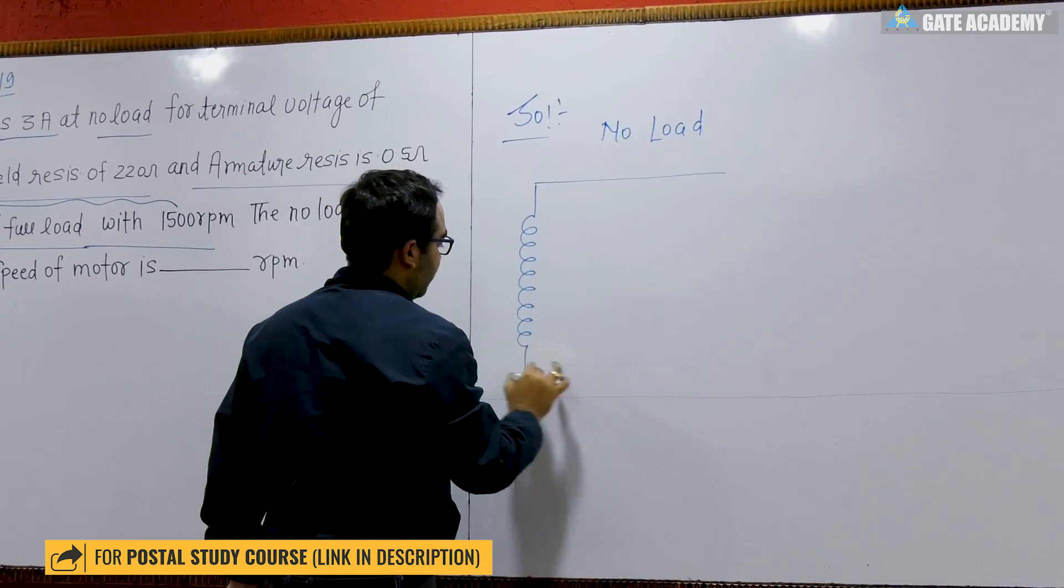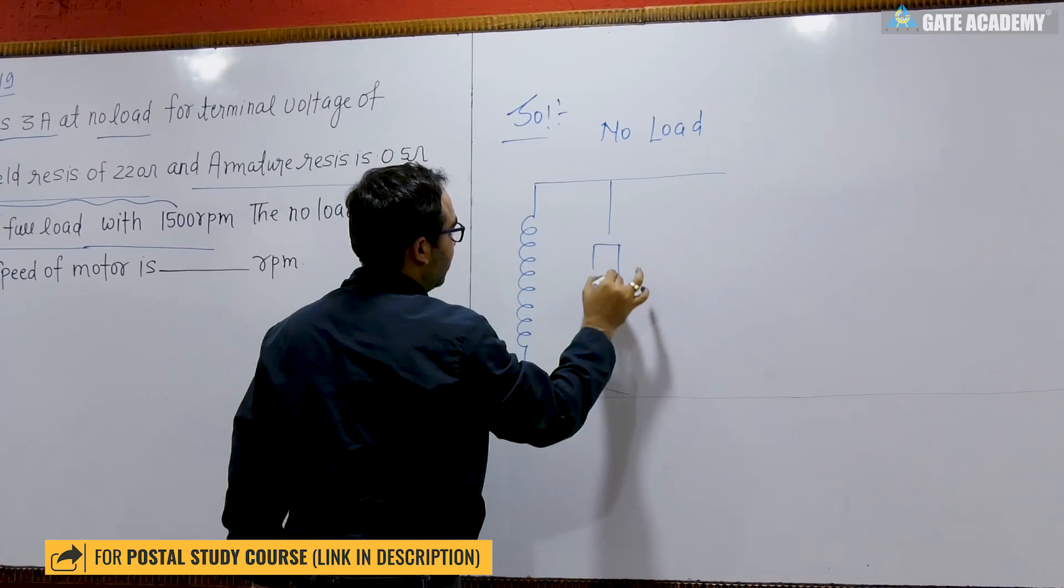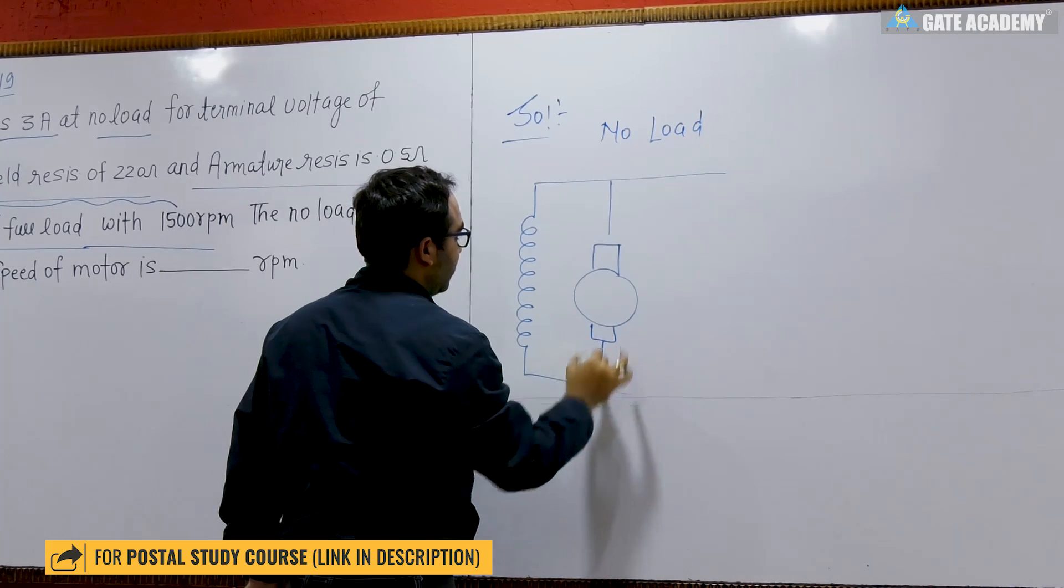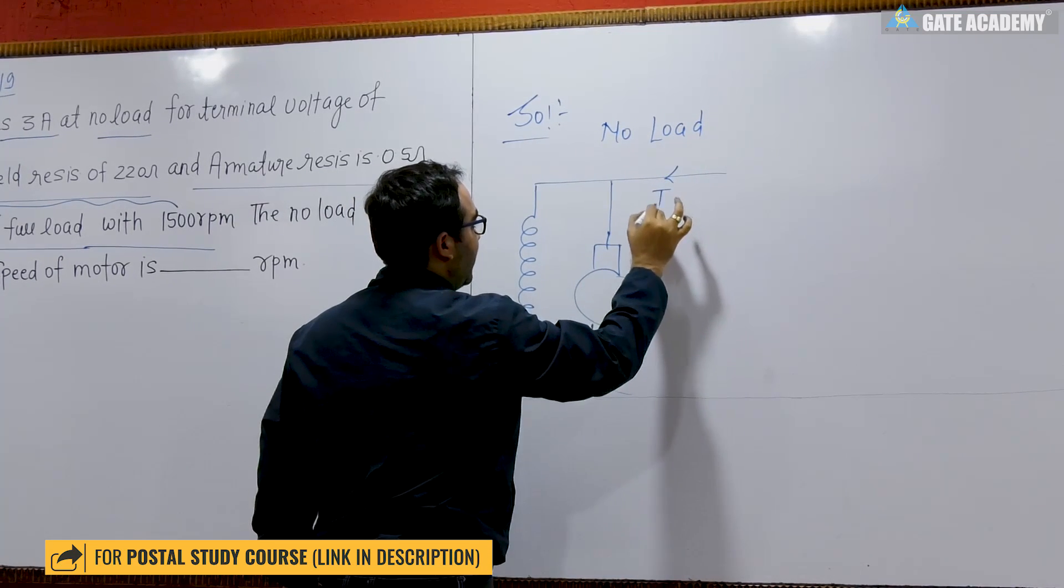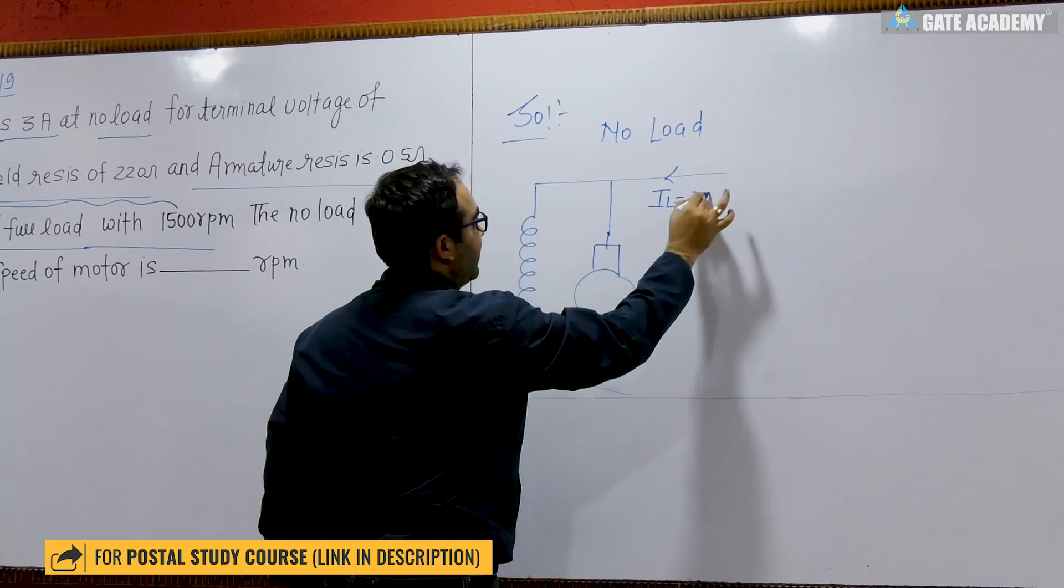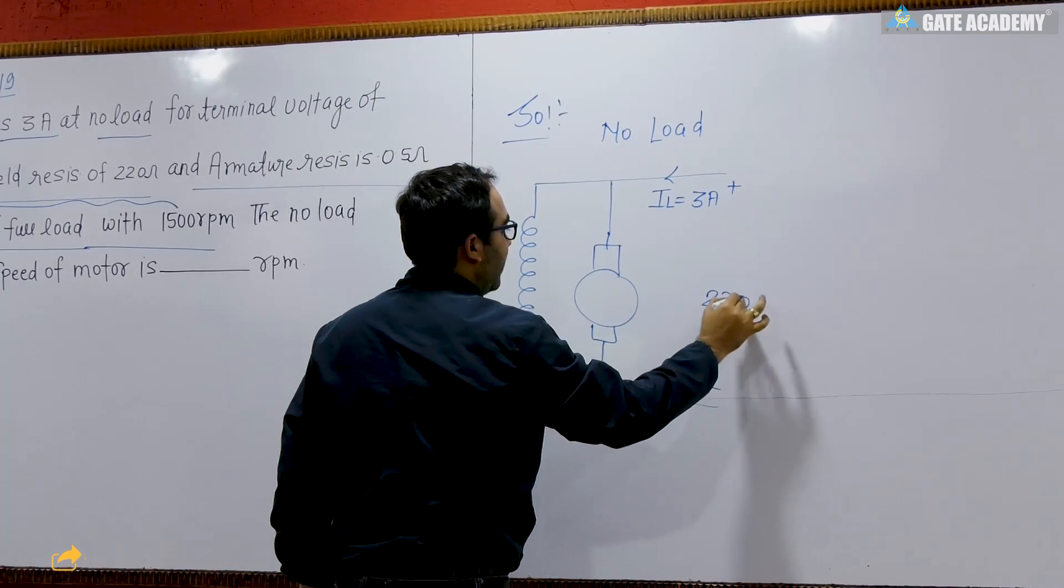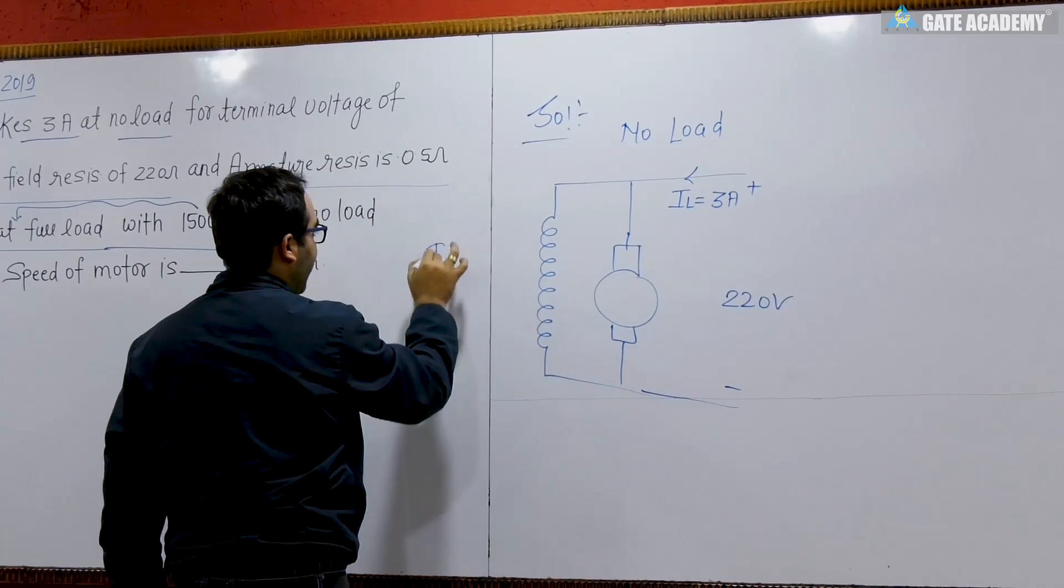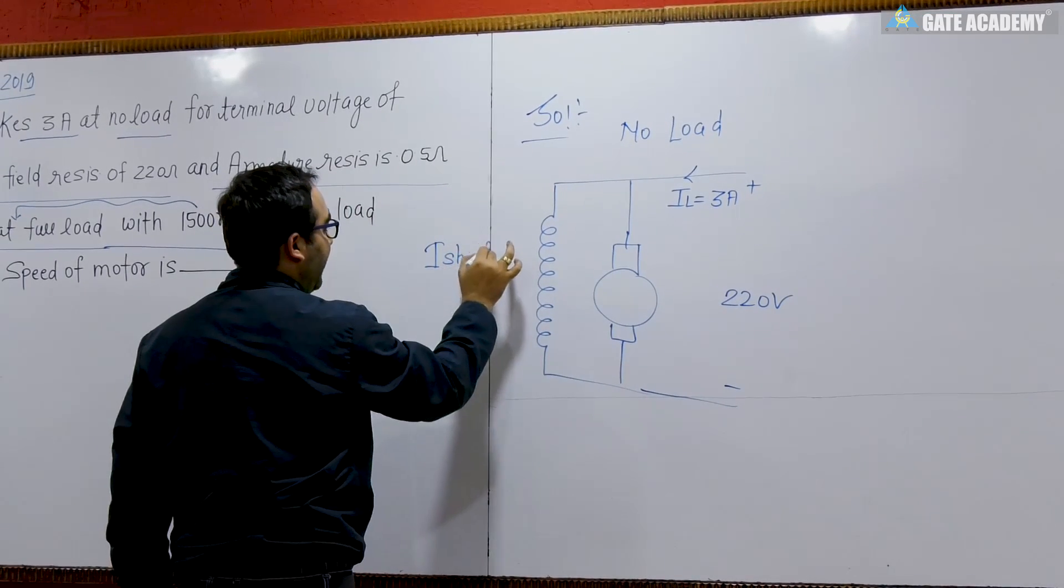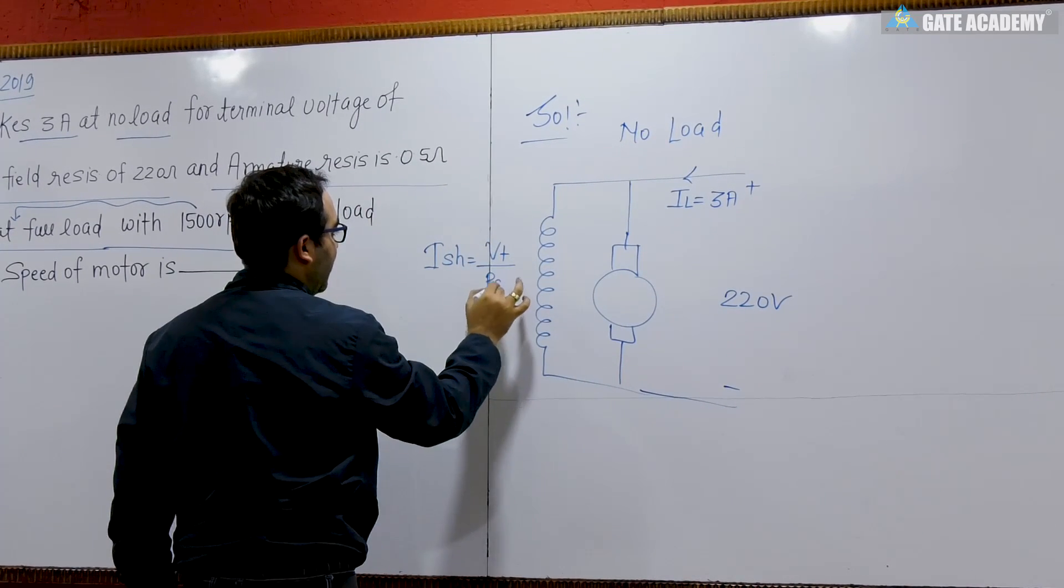At no load condition, the line current drawn by the motor is 3 ampere for terminal voltage 220 volt. Now the shunt resistance is given, so I can take Ish equals Vt upon Rsh.